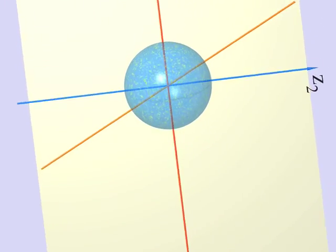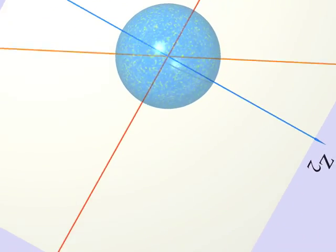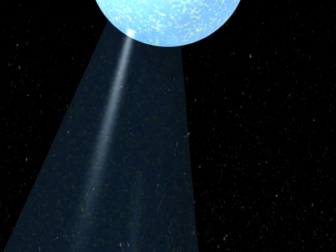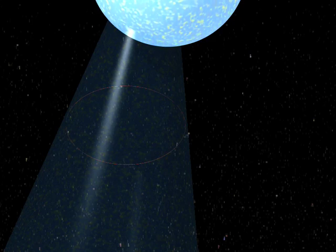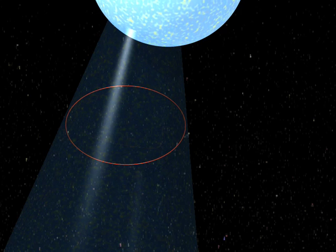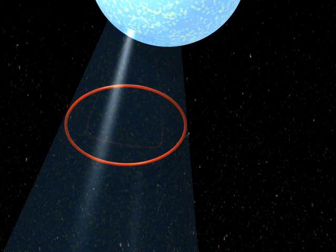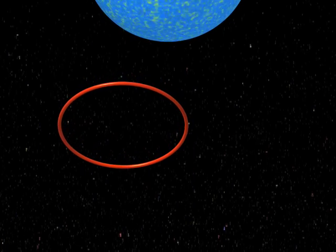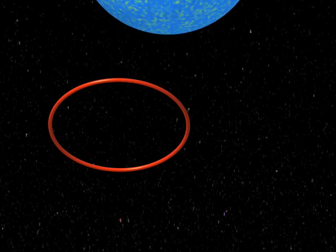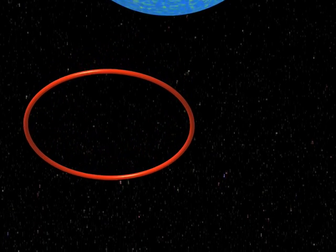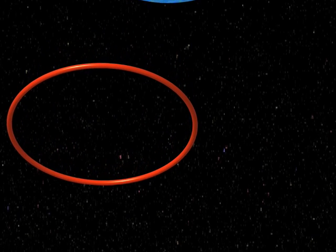We are going to look at all that using stereographic projection. Imagine that we project the three-sphere from the north pole onto the tangent space at the south pole, which is our three-dimensional space. Here is the projection of one of the circles which, as we have seen, is the intersection of one complex line and the three-sphere. But there are many such circles, one for each complex line going through the origin.